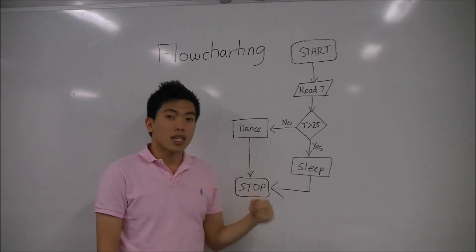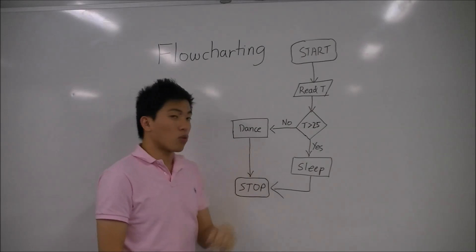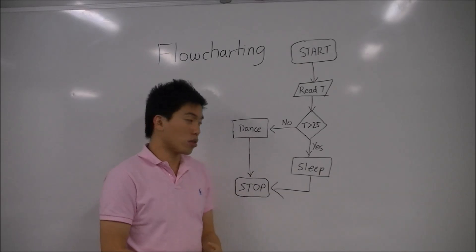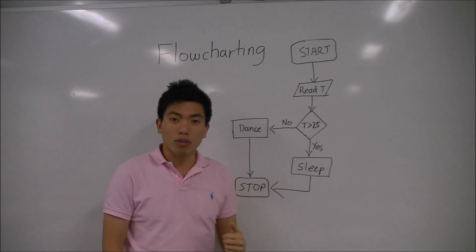The last one is a process or action box. This is when you're doing something, and these are rectangular blocks that you will use. So for example, I've got my actions as dance and sleep as my actions.